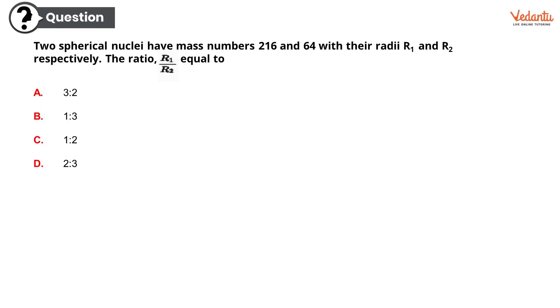Two spherical nuclei have mass numbers 216 and 64 with their radii R1 and R2 respectively. The ratio R1 upon R2 equals: option A 3 is to 2, option B 1 is to 3, option C 1 is to 2, or option D 2 is to 3. Again, a very simple easy question. Let's check out the answer and the answer is option A, 3 is to 2. Amazingly well done!